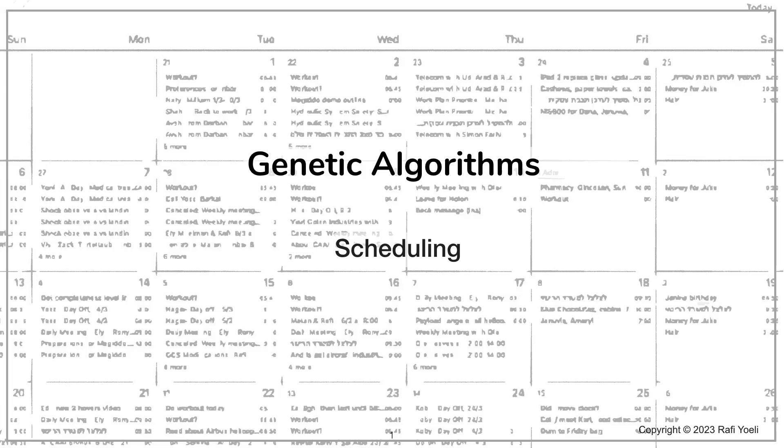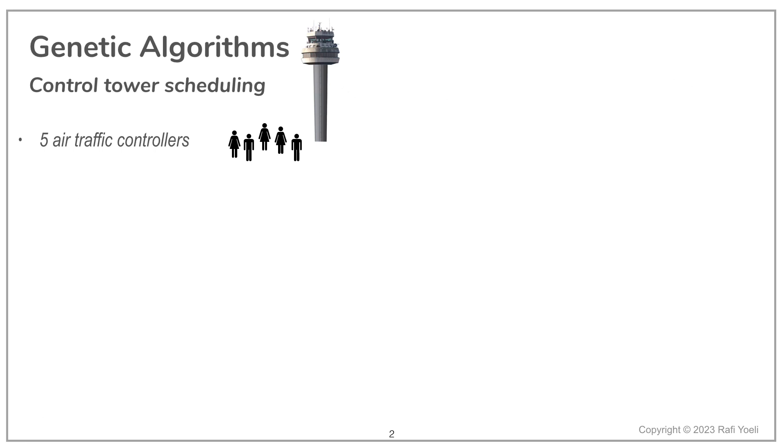Here's an exercise in scheduling, a subject that genetic algorithms are very good at. This can be planning a production line, creating a work schedule for an urgent engineering project, allocation of resources in emergencies, or as in our case, preparing a weekly schedule for controllers working shifts in a control tower.